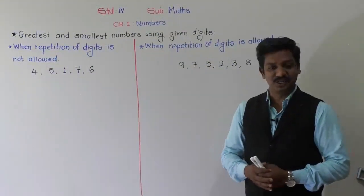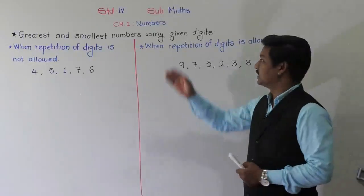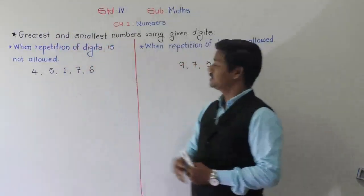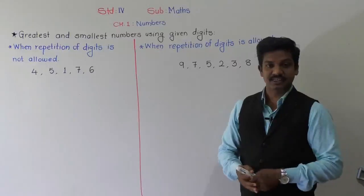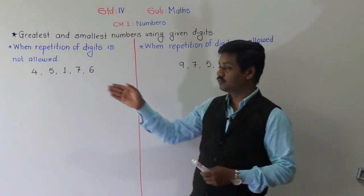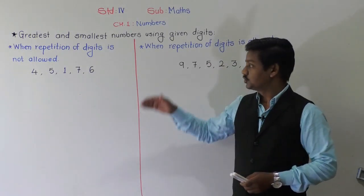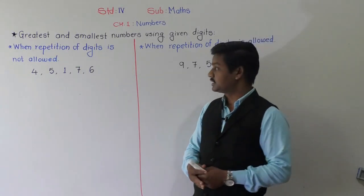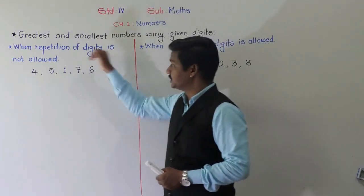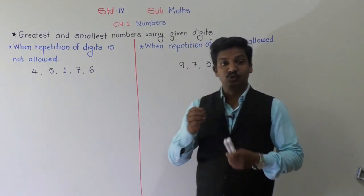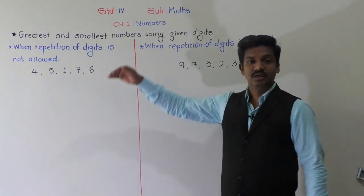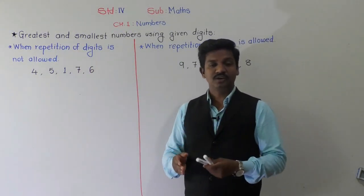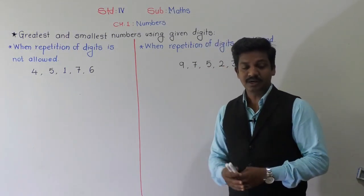Hello everyone, welcome to today's video lecture on maths. In our first lesson on numbers, we are going to learn the next concept — greatest and smallest numbers using given digits. In earlier classes you learned to form the greatest and smallest three-digit or four-digit numbers. Here we are going to make the greatest and smallest numbers using given digits, and we are dealing with five and six digit numbers.